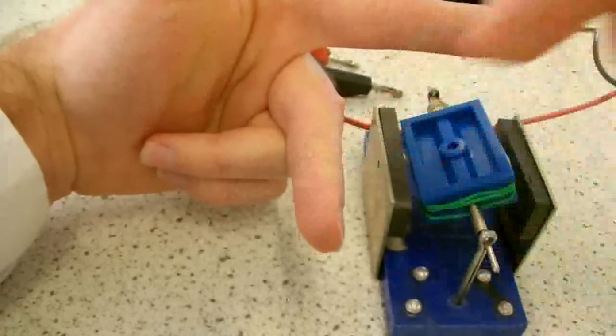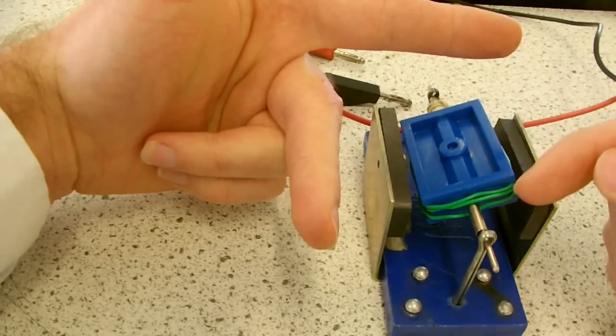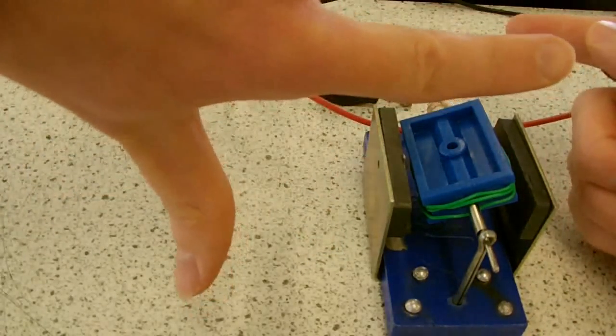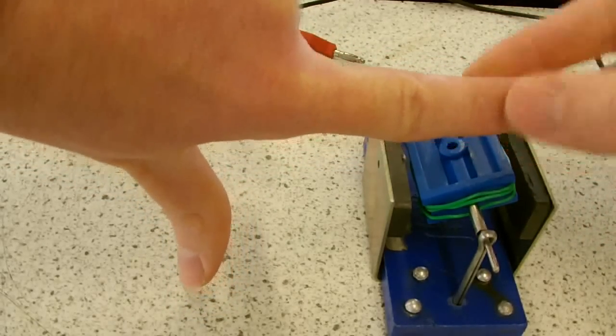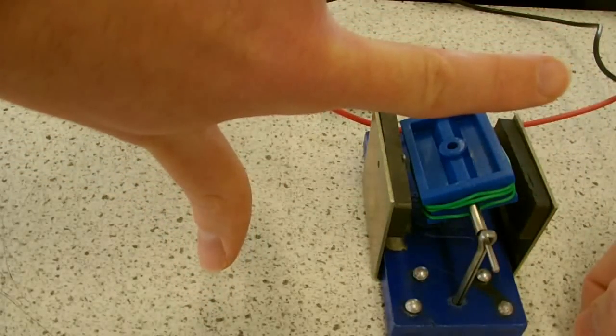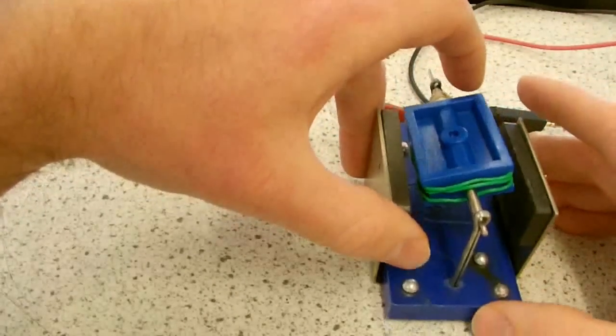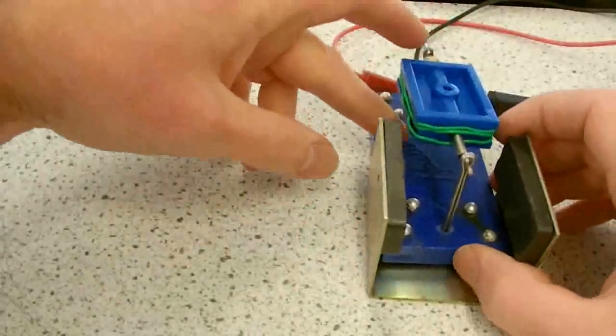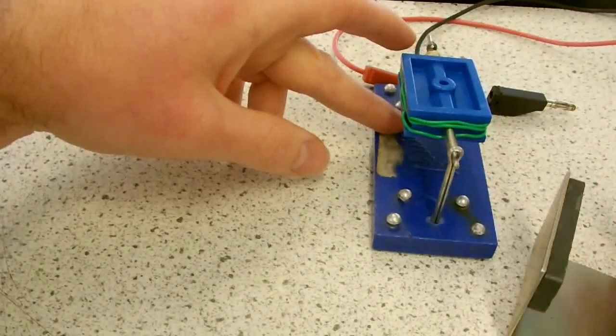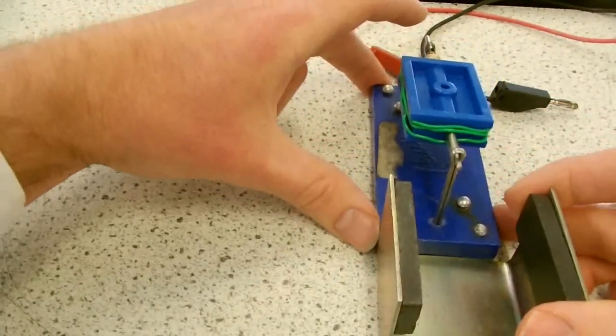The second finger, the current finger, is pointing in this direction. So therefore, everything switches except the field. The force is now downwards. Similarly, if I just move the magnetic field around, so now the right hand side is north, the left hand side is south.